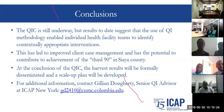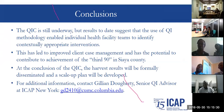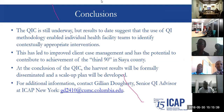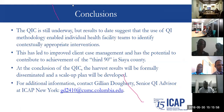Conclusions: the QIC is still underway, but results to date suggest that the use of QI methodology enables individual health facility teams to identify contextually appropriate interventions to improve timely client case management, and has potentially contributed to achievement of the third 90. At the conclusion of the QIC, the harvest and scale-up plan will proceed.